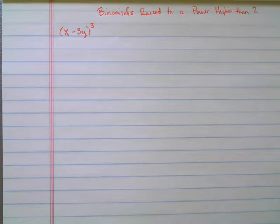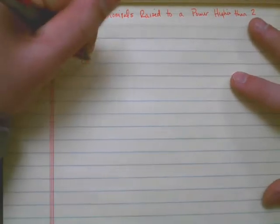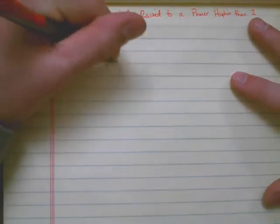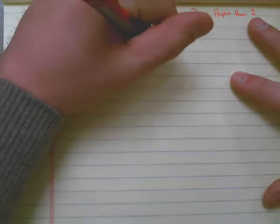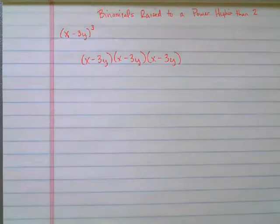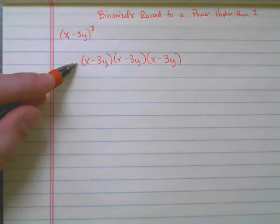The first thing you need to understand is that x minus 3y to the third power is the same thing as x minus 3y multiplied times itself three times. So in essence, what we've done is this is just a shorthand way of saying this expression.